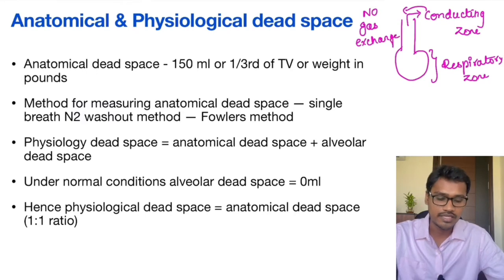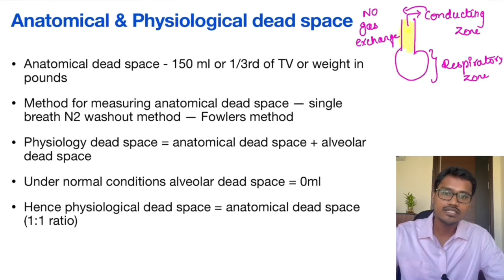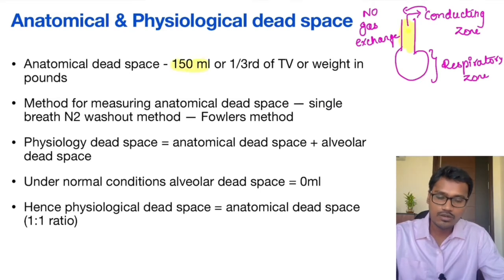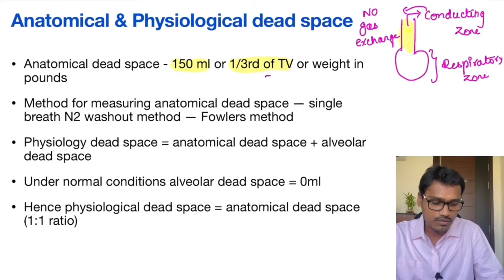Because gas exchange is not happening in the conducting zone, this region is called the anatomical dead space. In anatomical structure itself it is not doing any gas exchange, so it is called anatomical dead space. The normal value is around 150 ml in a normal 70 kg adult, or it is one third of tidal volume. Tidal volume is normally 500 ml.